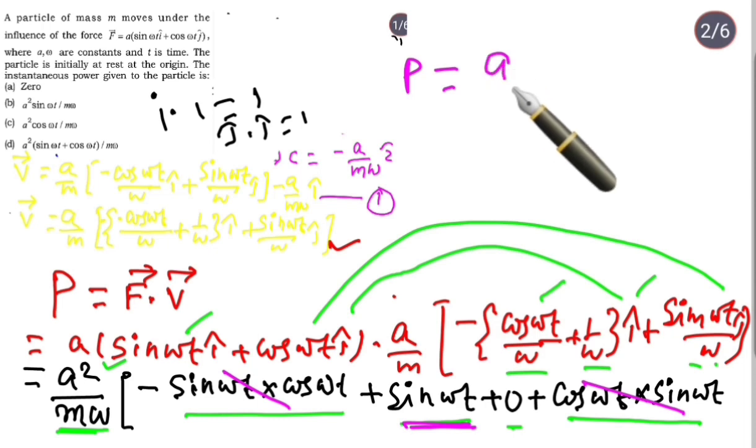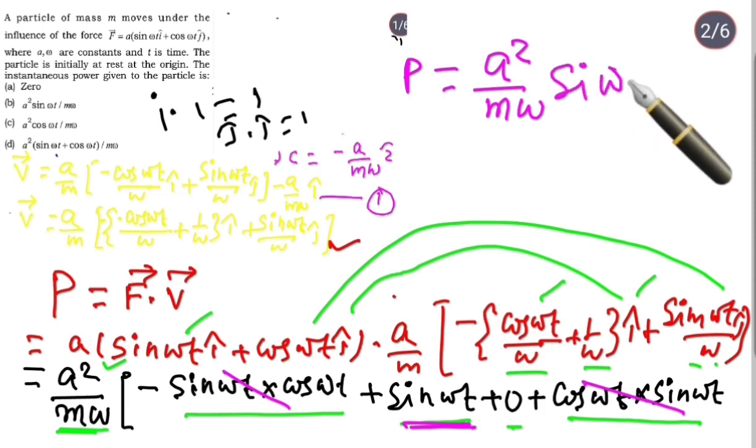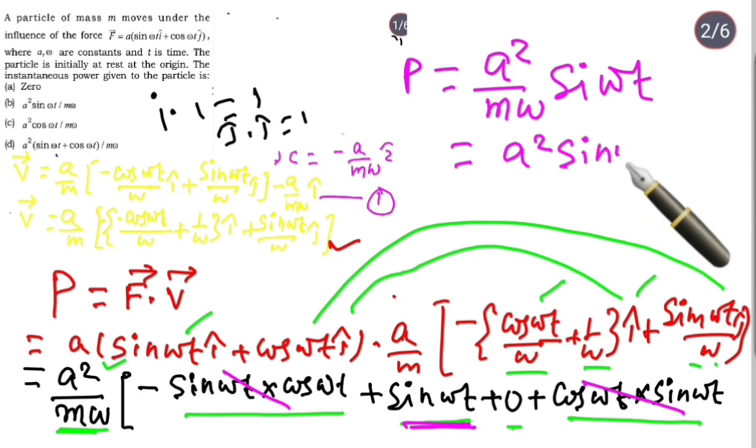Only sin ωt remains. So we can directly write the power as a² divided by mω times sin ωt. This is the solution to this question. Writing it in the option format: a² sin ωt divided by mω. This is the answer to this question.